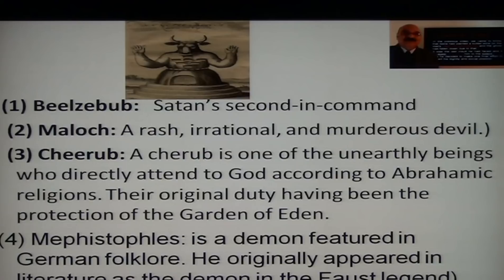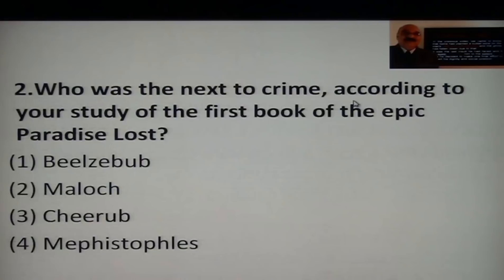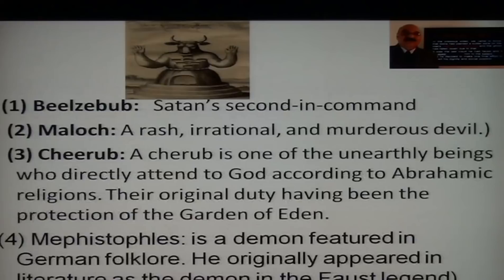Dr. Faustus was a scholar, thirsty for knowledge. He sold his soul — he made a bargain with Mephistopheles — and he got 24 years of voluptuous life. After 24 years, Mephistopheles came to capture his soul, and that was the tragedy of Dr. Faustus. So the answer is Beelzebub — he was next to crime in Paradise Lost Book 1.